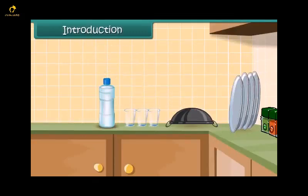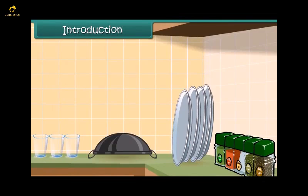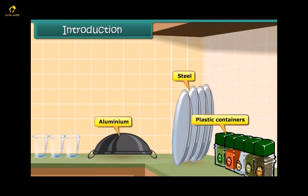Your kitchen shelves must be neatly arranged with rows of food containers mostly made up of plastics. Plastics have taken so much prominence in our lives that we have replaced materials like aluminium, iron, steel and glass with plastics.